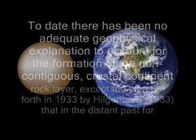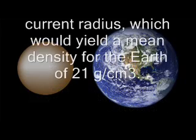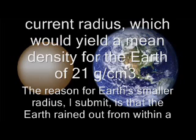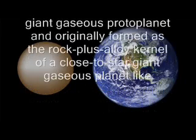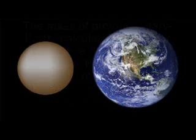The reason for Earth's smaller radius, I submit, is that the Earth rained out from within a giant gaseous protoplanet and originally formed as the rock-plus-alloy kernel of a close-to-star giant gaseous planet like Jupiter (Herndon 2004b, 2004c, 2006b). The mass of that protoplanet, calculated from solar abundance data (Andersen and Graves 1989), lies in the range of about 275 to 305 times the mass of the present-day Earth — quite similar to Jupiter's mass of 318 Earth masses.